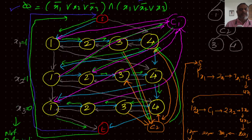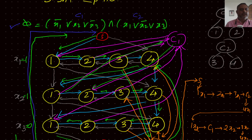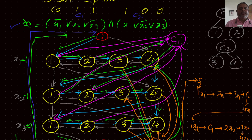Now, will this satisfy our 3-SAT problem? X1=1, so X1-bar=0; X2=1; X3=0, so X3-bar=1. For clause C1 we have X1-bar=0, X2=1, X3-bar=1, giving 0 OR 1 OR 1 = 1. For clause C2 we have X1=1, X2-bar=0, X3=0, giving 1 OR 0 OR 0 = 1. So C1 AND C2 = 1. Therefore X1=1, X2=1, X3=0 is indeed a valid solution for our 3-SAT problem.